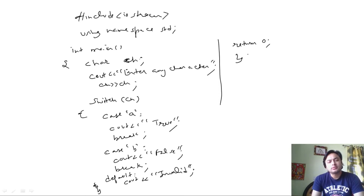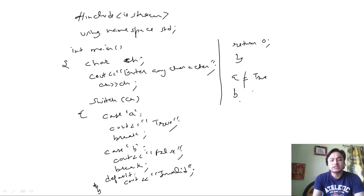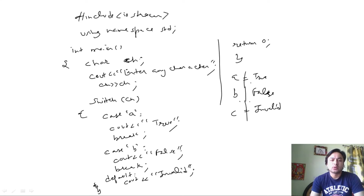This is a simple example program: if the character value is 'a' then it prints true, if the character value is 'b' then it prints false, and if there is any other value such as 'c' or 'd', then it prints invalid. So when the user enters 'a' it will show true on the output screen, if 'b' is entered it will show false, and if 'c' is entered it will show invalid. Now I am going to implement this switch control statement in Code::Blocks software.